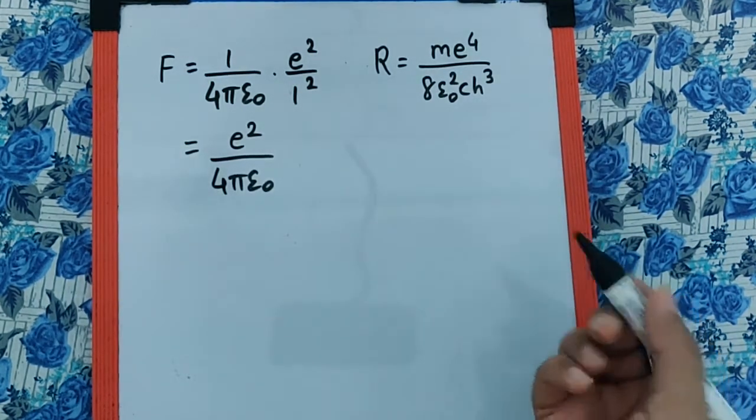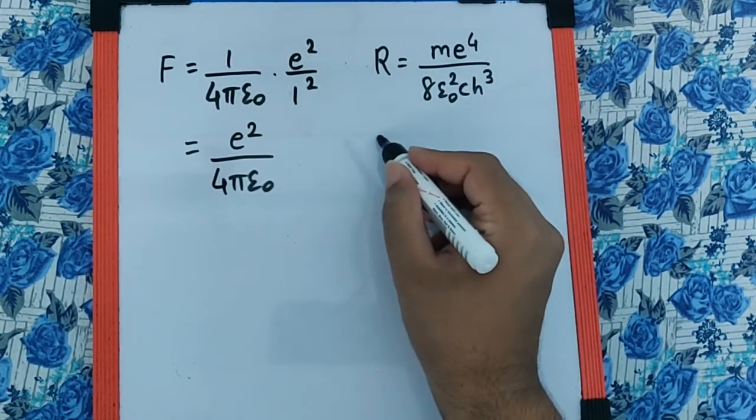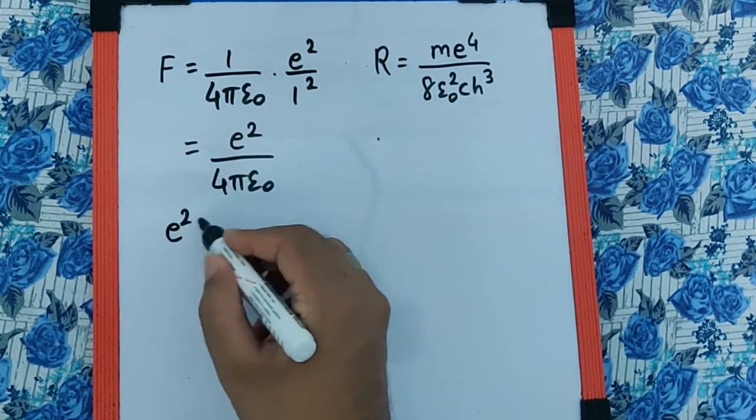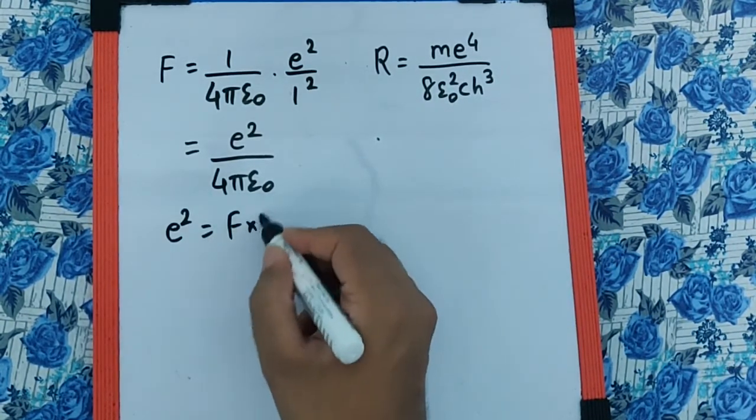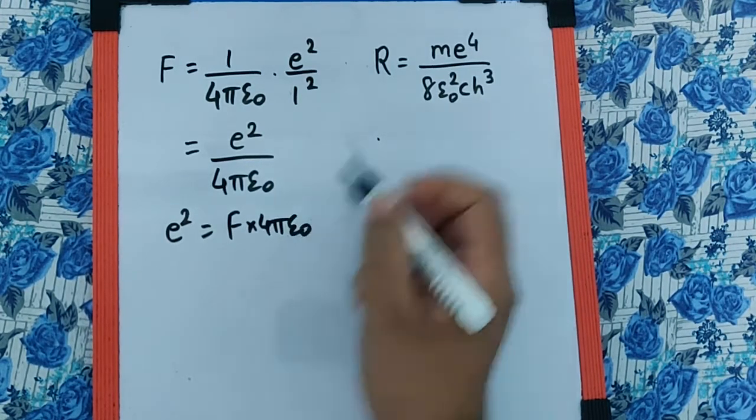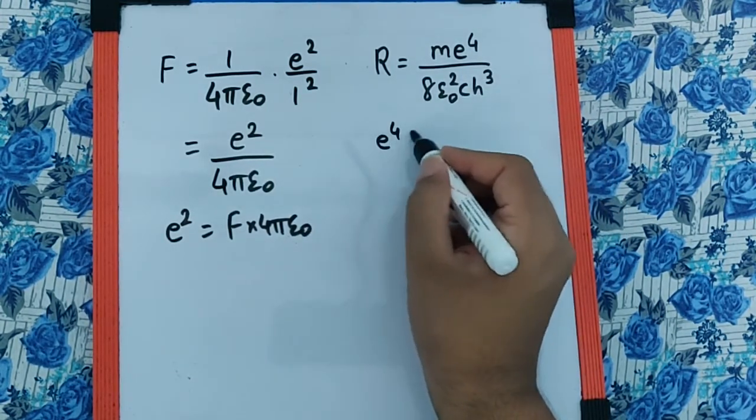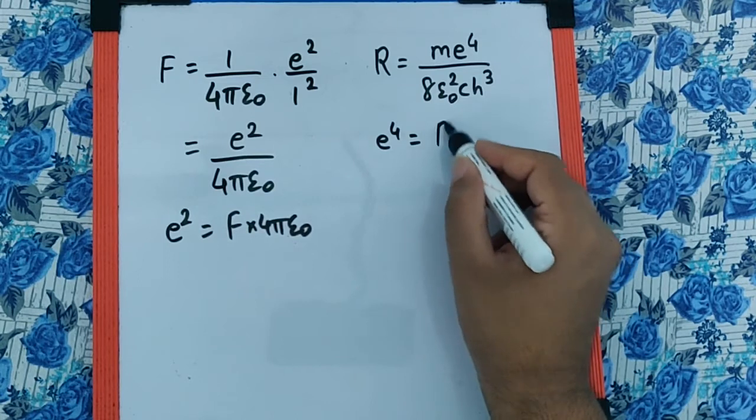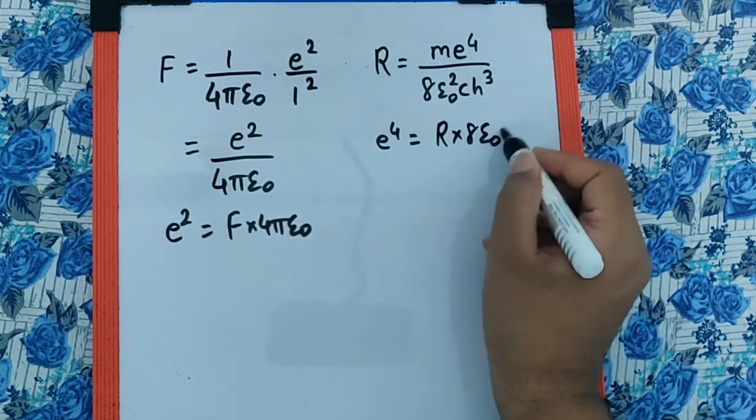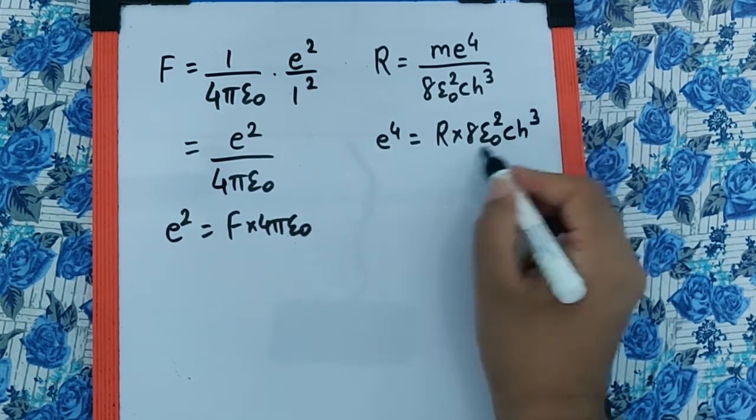So now can I say over here e² will be going to be F into 4πε₀, whereas over here e⁴ is going to be R into 8ε₀² CH³ by M.